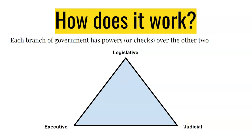At the national level, that would be Congress for legislative, the president and all the executive departments for the executive branch. And at the judicial level, we would have the US Supreme Court and then the federal courts below that.